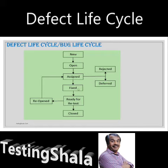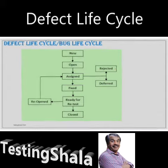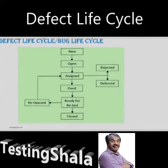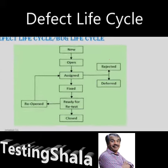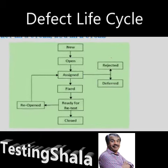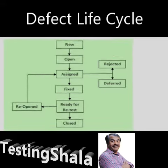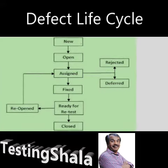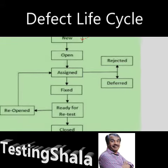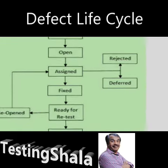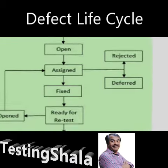The defect life cycle, or bug life cycle — any defect starts with a status of 'new.' Whenever a tester or anybody logs a defect, it will be opened with a new status.